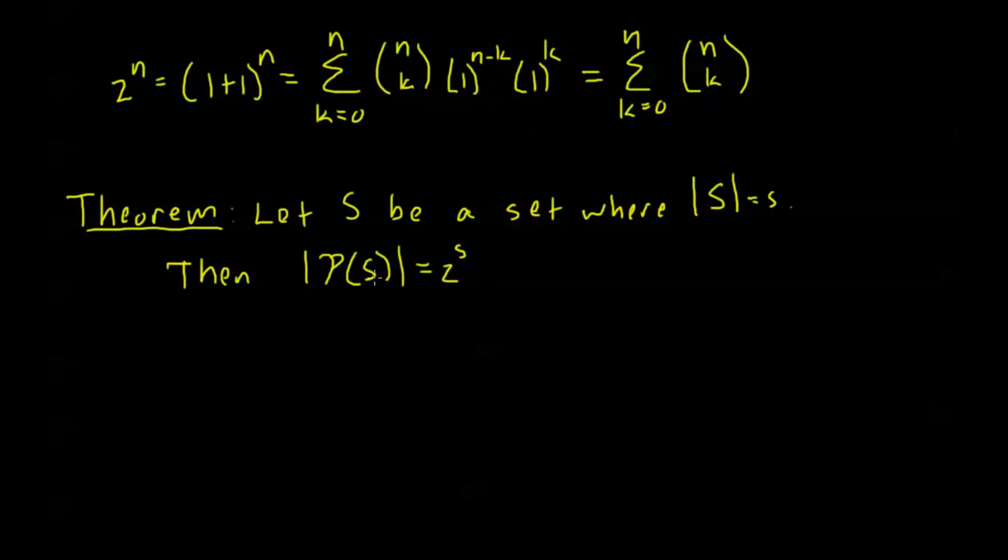So recall that a power set of S is the set of all possible subsets of S. Now we know that with our binomial coefficients, or our selection function, or choice function here, for each value of k, n choose k is the number of subsets of a set of size n, which have a size k. So n choose 0 is how many subsets there are of size 0, n choose 1 is how many subsets there are of size 1, etc.